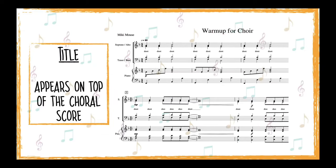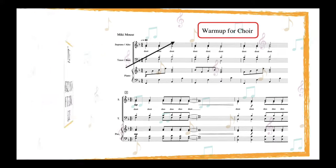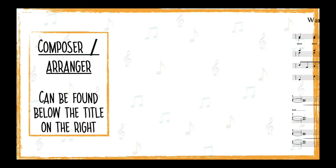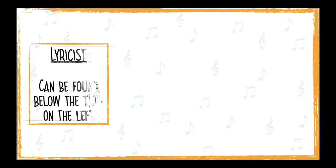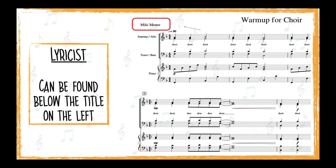The title of the score always appears on top of the choral score. On the top right side below the title, we can find who the composer of the piece is. If a piece is an old folk song or an arrangement of an original composition, we will also see the name of an arranger or editor indicated below the composer's name. On the opposite side from the composer, we will find the name of the lyricist — the person who wrote the lyrics or text of the piece.